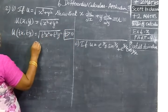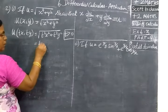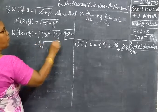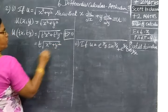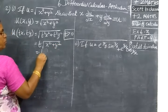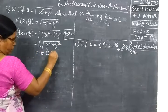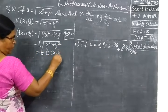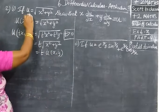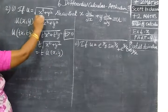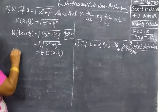That means we are multiplying by t where the value of t is greater than 0. So now we can take t square outside the root: t square root of x square plus y square. This is equal to t into u of x, y. u of x, y is the original function, expressed in terms of x, y.